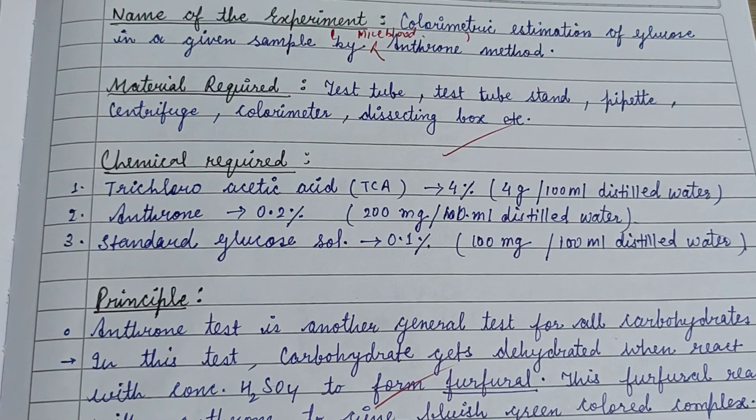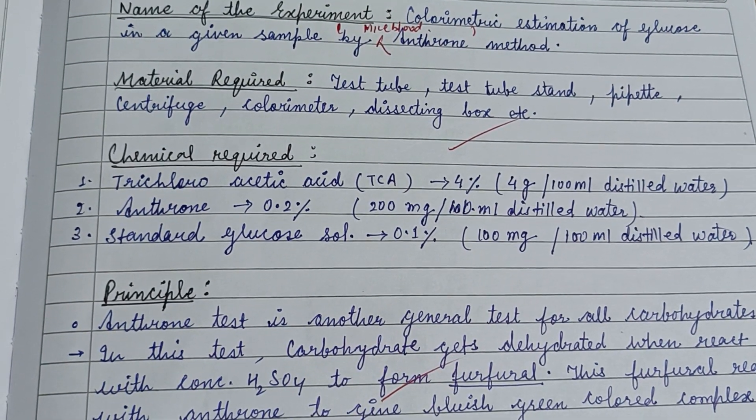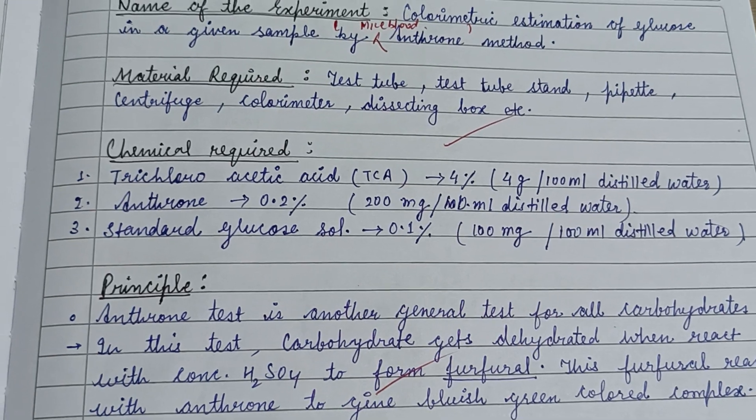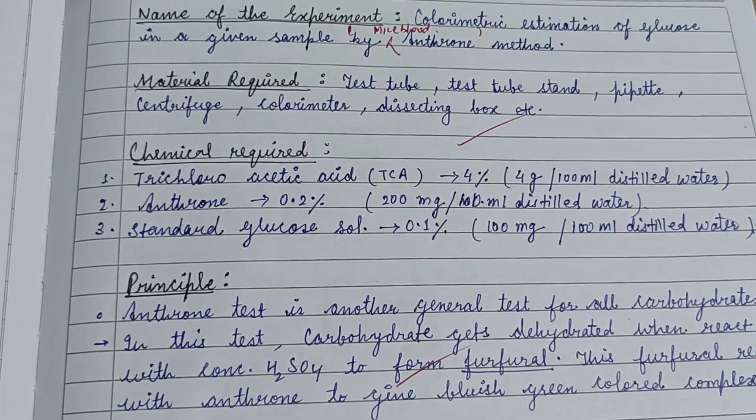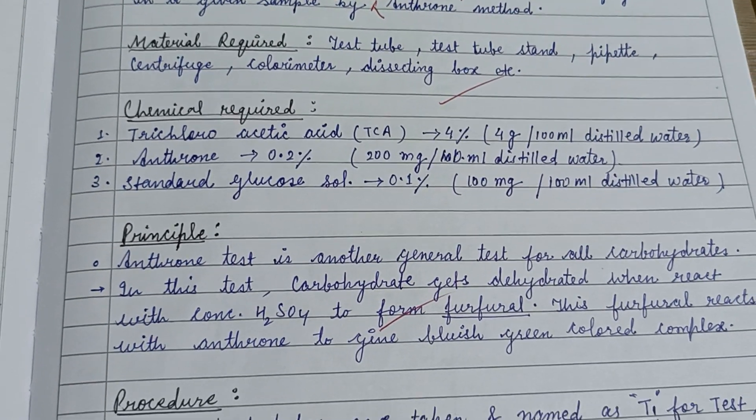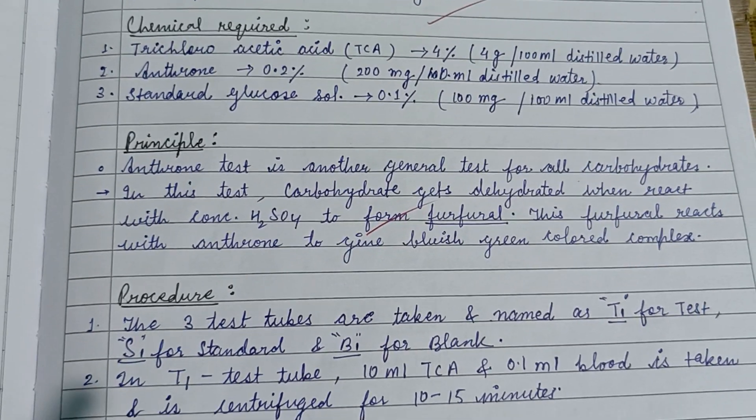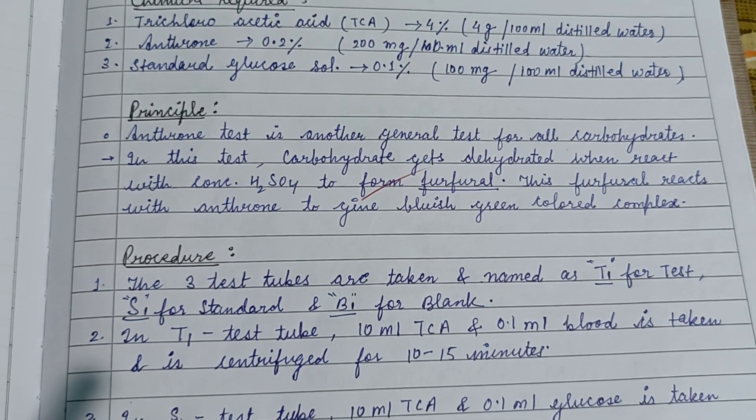This video is about the colorimetric estimation of glucose in a given sample by the anthrone method. This is included in the biochemistry section of practical geology semester 2. The chemicals required are trichloroacetic acid and anthrone, along with standard glucose solution.